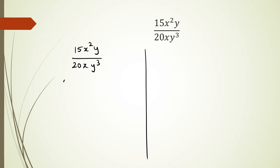So I've got 5 times 3 times x squared, which is times x, and then y by itself. And that's all divided by. I've got 20, which is 5 times 4 times x times y, 3 lots of y.